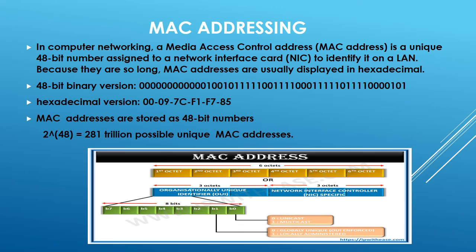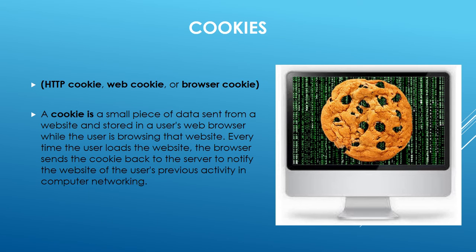In computer networking, a Media Access Control (MAC) address is a unique 48-bit number assigned to a Network Interface Card (NIC) to identify it on a LAN. Because they are so long, MAC addresses are usually displayed in hexadecimal. For example, the 48-bit binary version converts to 00-09-7C-F1-F7-85. MAC addresses are stored as 48-bit numbers — 2 to the power of 48 — making 281 trillion possible unique MAC addresses.